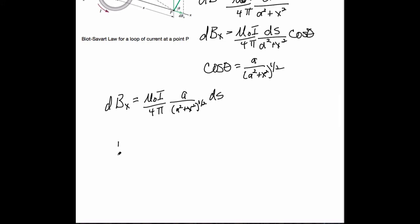Mu naught times I over 4 pi. And then I've got A over X squared, I mean A squared plus X squared to the three halves. And then it's now the closed integral of DS.